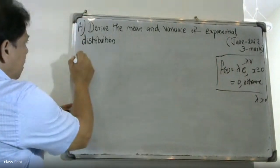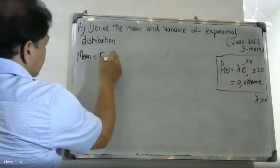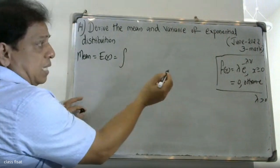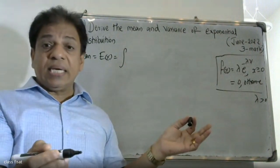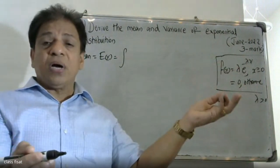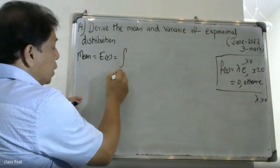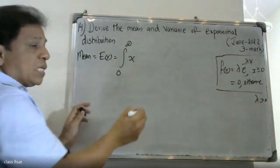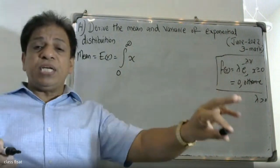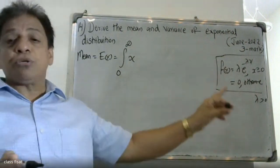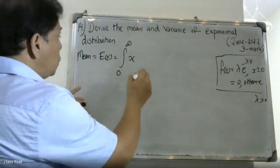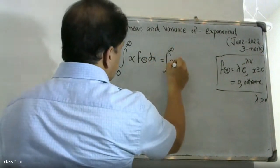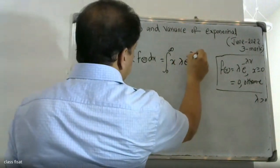The mean is the expectation of x. Expectation of x is the integral from 0 to infinity of x into f of x, that is x into lambda into e raised to minus lambda x dx.